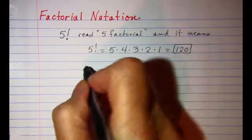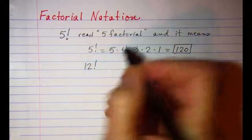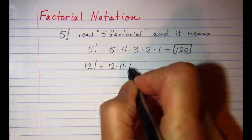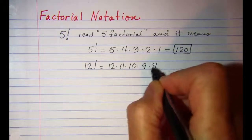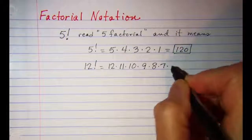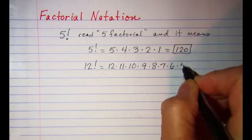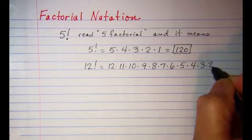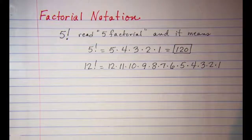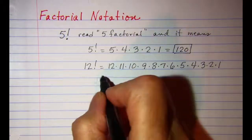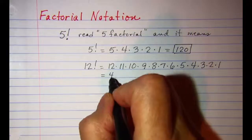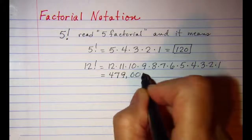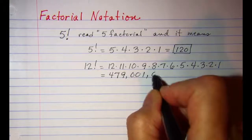If we saw 12 factorial, that would mean 12 × 11 × 10 × 9 × 8 × 7 × 6 × 5 × 4 × 3 × 2 × 1, and that is 479,001,600.